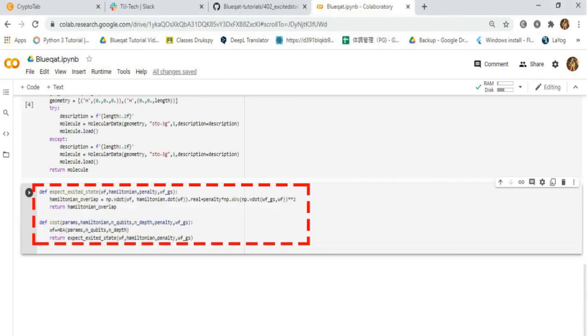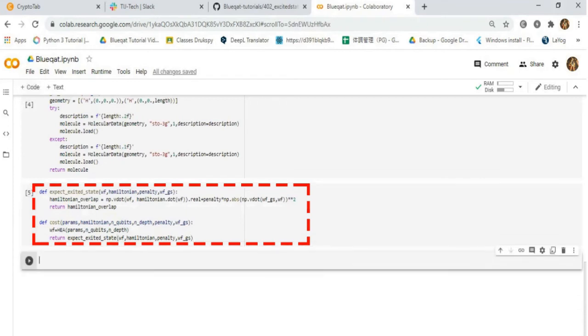The expected value is calculated using the wave function obtained by VQE. In the expected value calculation, the term concerning the overlap between the ground state and VQE wave functions is added to the original expected value of the Hamiltonian with the penalty.